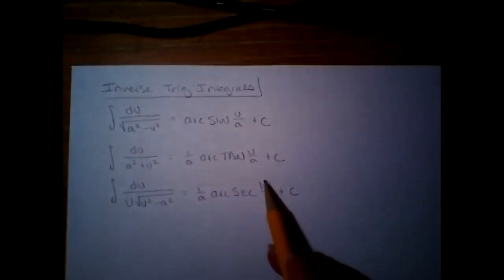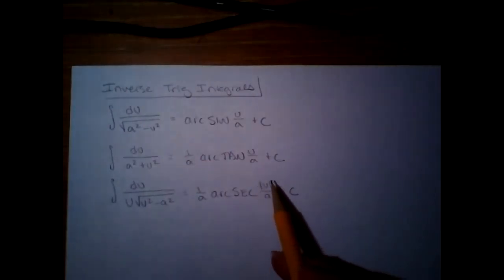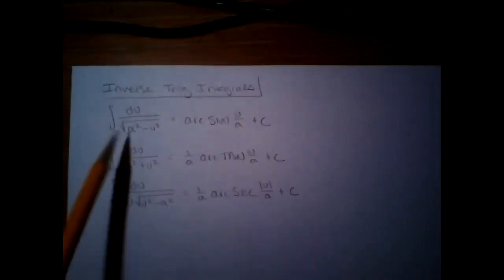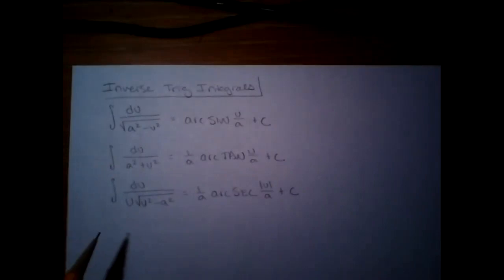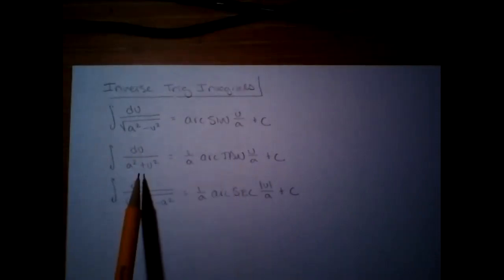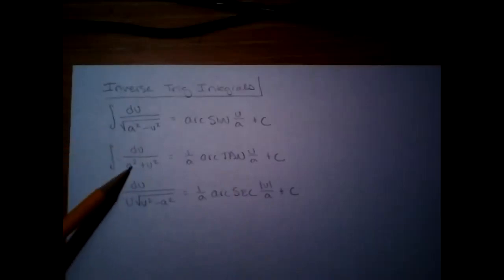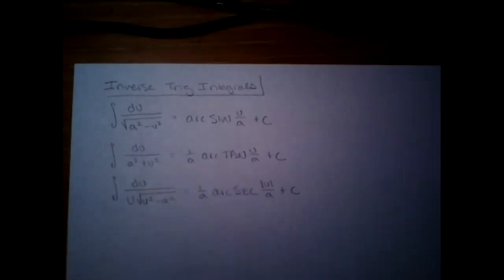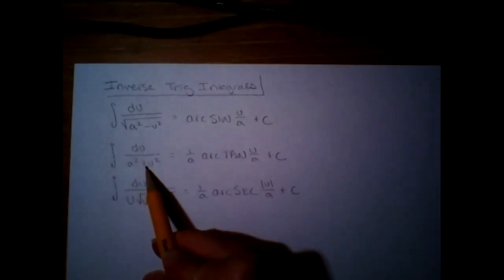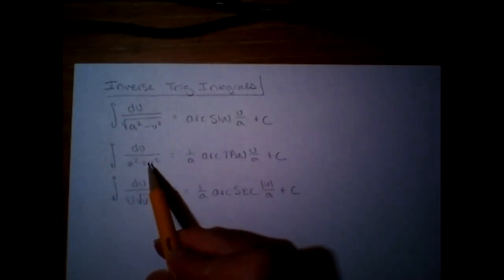There are very subtle differences. The arc sine does not have that one over a out front, and the arc secant has an absolute value. So this is really the only part you need to know, and they're all the same. You just need to be able to identify which one is which. How can you tell which one is arc tangent — what is different about this one versus the other two? The one that doesn't have the square root is arc tangent. I wrote this as a squared plus u squared, but it could also be u squared plus a squared — the order doesn't matter.